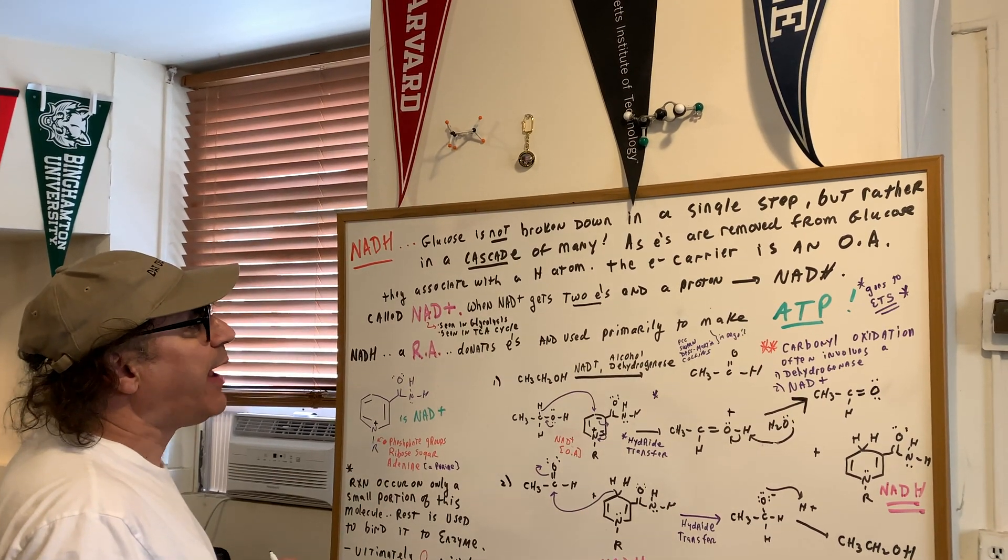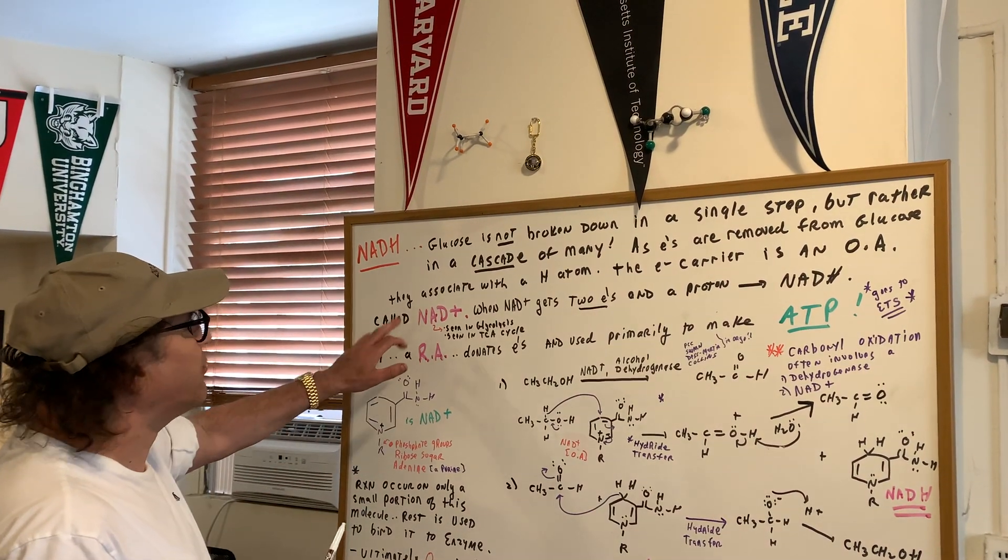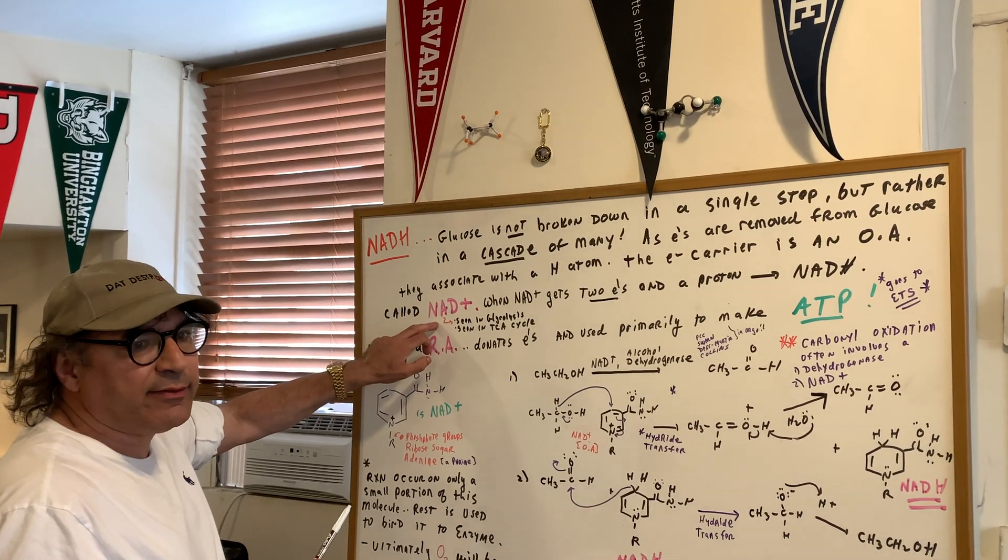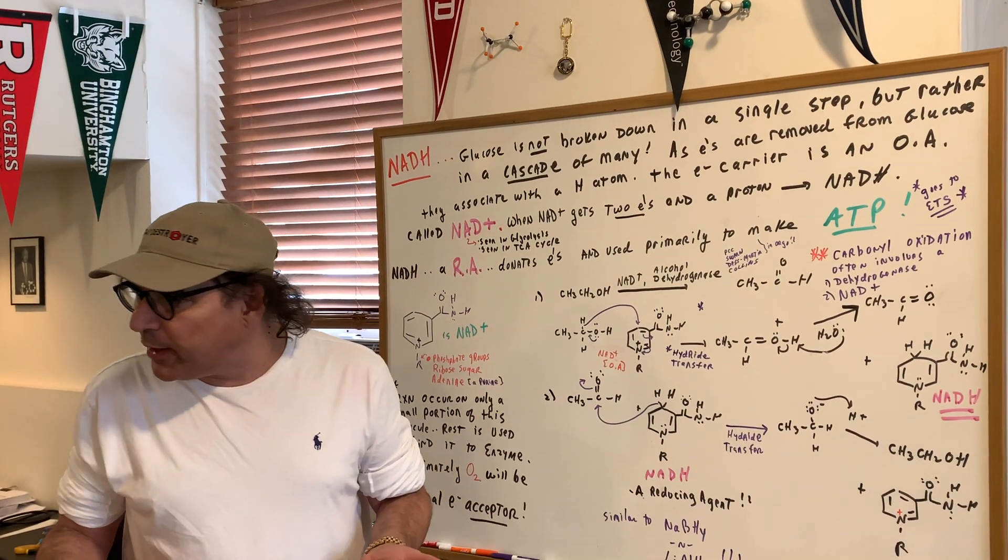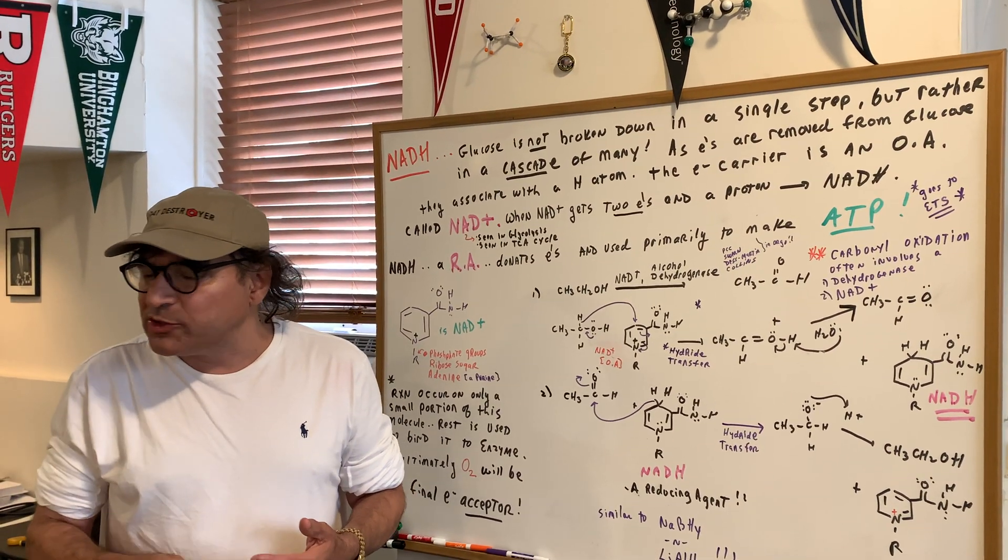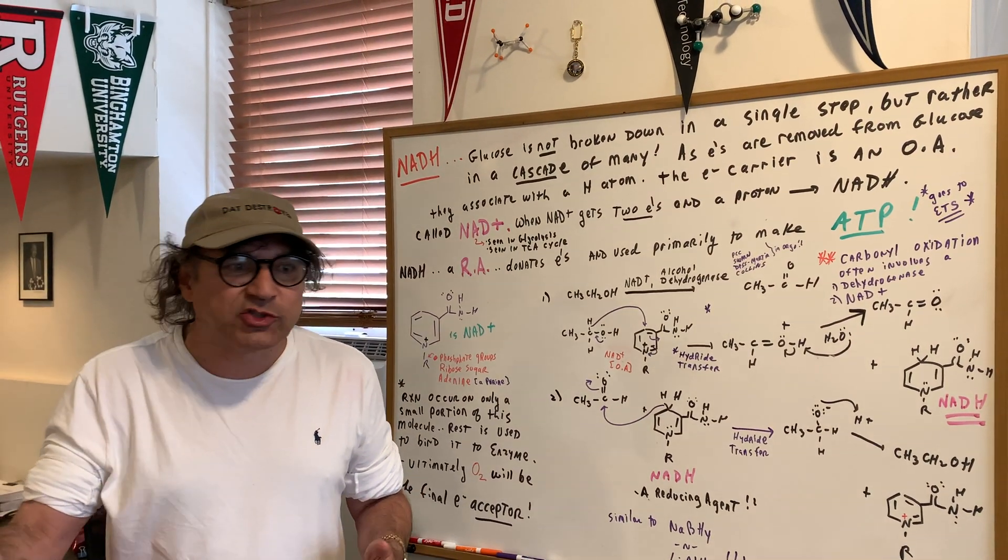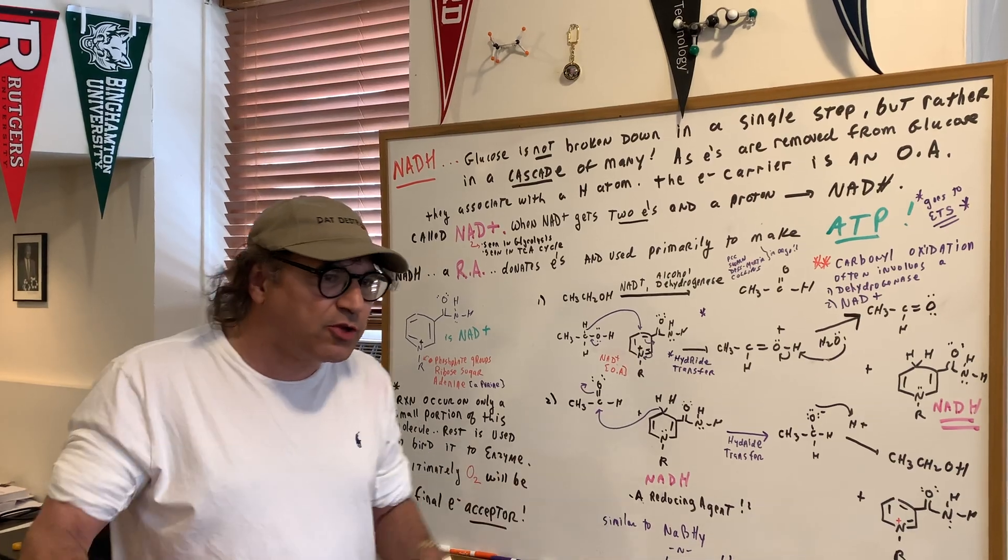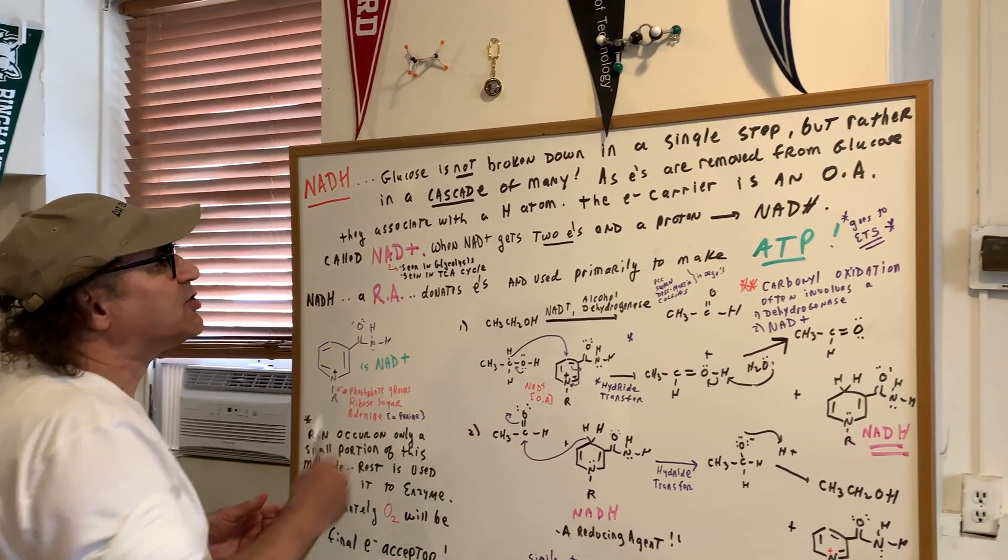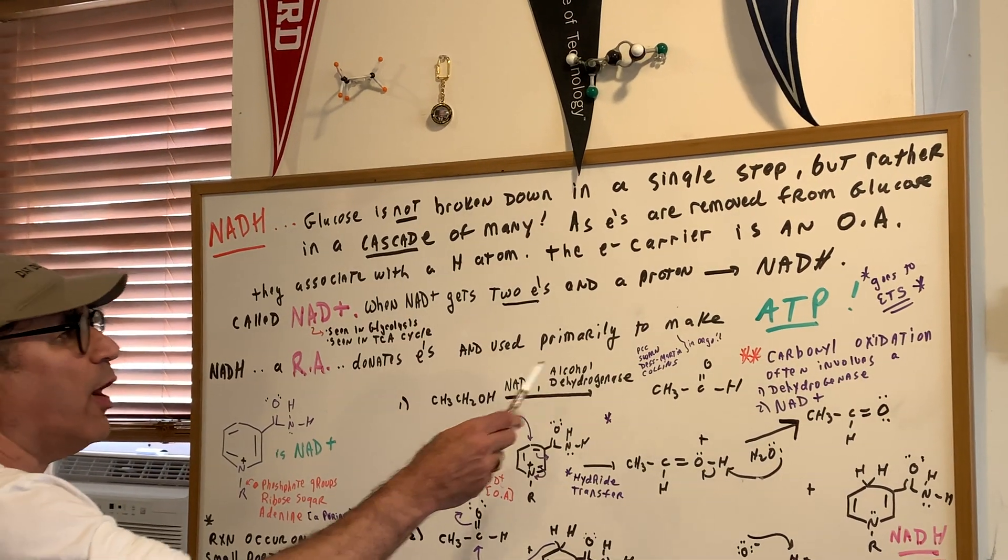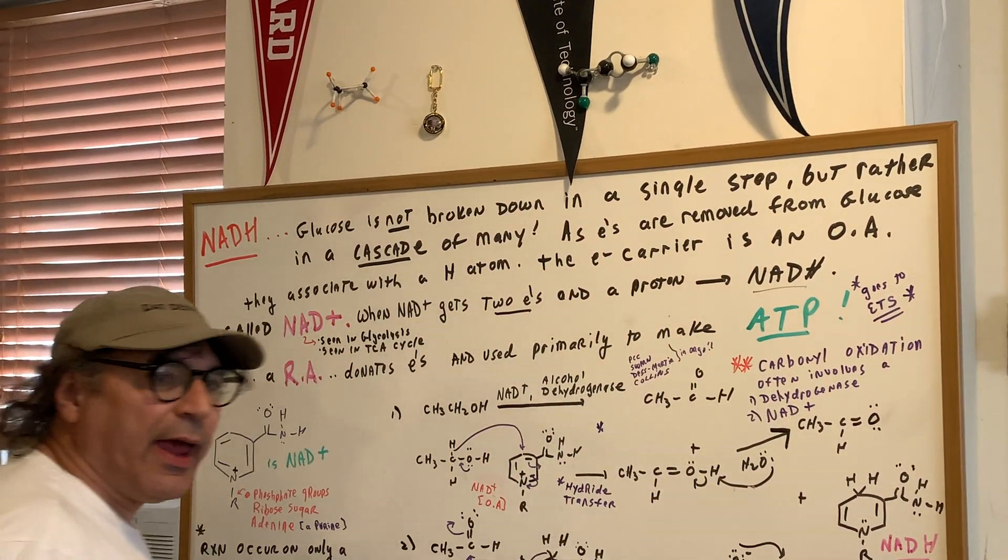And the electron carrier is going to be an oxidizing agent called NAD+. Now, if you guys remember, we saw NAD+. Where did we see it? We saw it in glycolysis. We saw it in the TCA cycle. That's the two that we concentrated on. When NAD+ gets two electrons and a proton, it forms NADH.